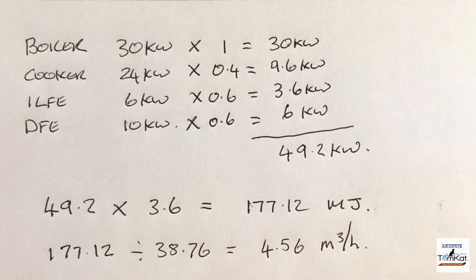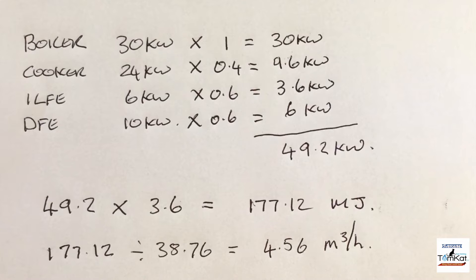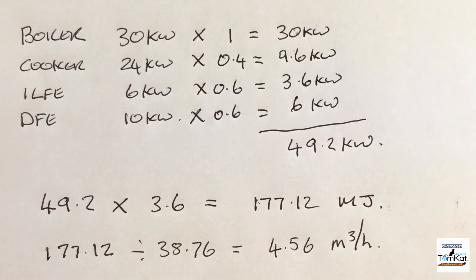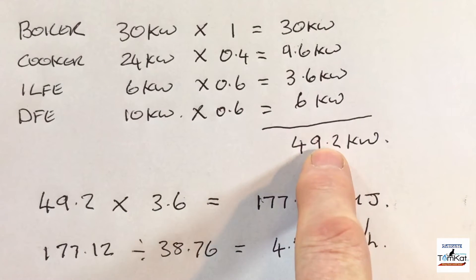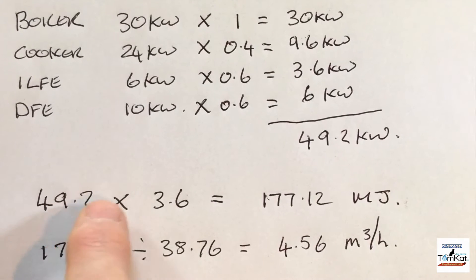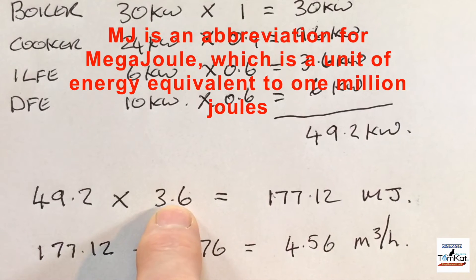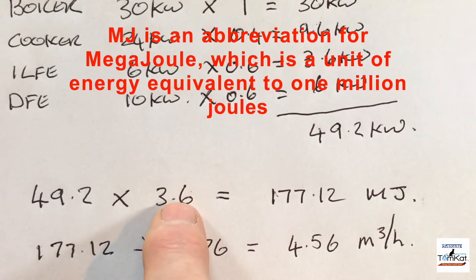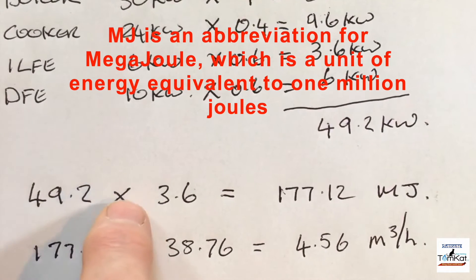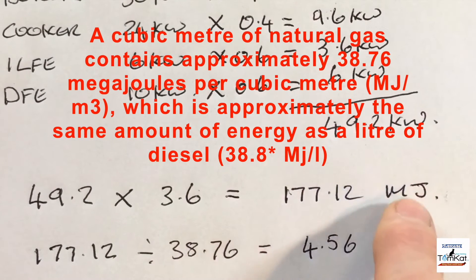Step two: add up the total gas load and convert the total kilowatt figure into megajoules. Our total load is 49.2 kW. We multiply by 3.6 because there are 3.6 megajoules in a kilowatt-hour. So 49.2 × 3.6 = 177.12 megajoules.